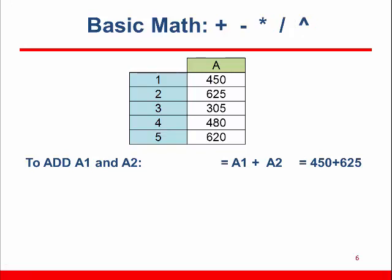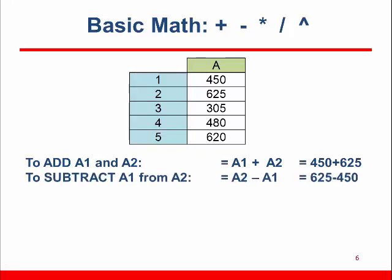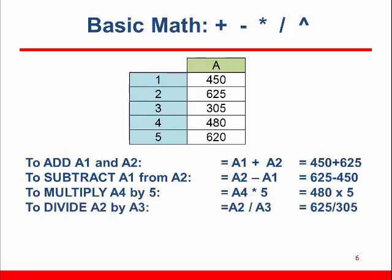Using the given data, to add A1 and A2 you would enter equal A1 plus A2. To subtract A1 from A2, you would enter equal A2 minus A1. To multiply A4 by 5, you would enter equal A4 asterisk 5. To divide A2 by A3, you would enter equal A2 slash A3. To square A3, you would enter equal A3 carat 2.